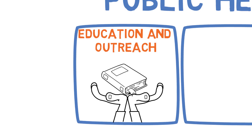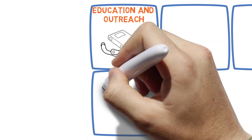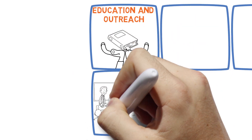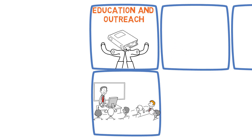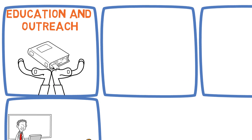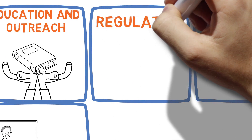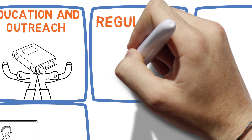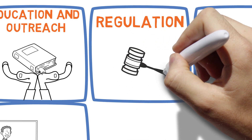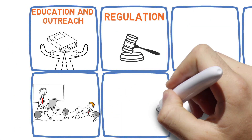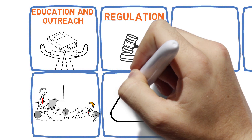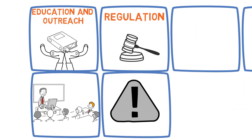This can include campaigns to raise awareness about the dangers of alcohol and to encourage moderation. Secondly, regulation: public health authorities can implement regulations that reduce the availability and appeal of alcohol — things like taxes on alcohol, restrictions on advertising, and limits on sales.